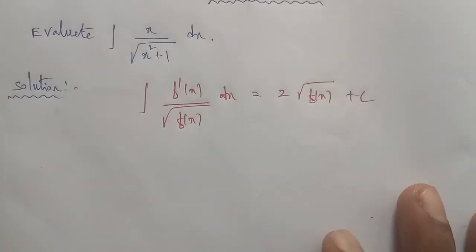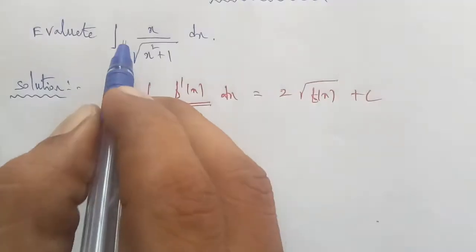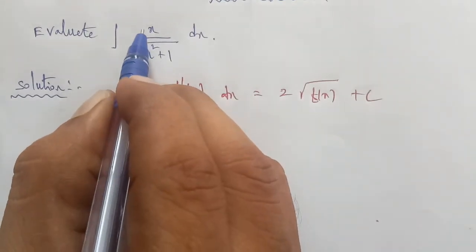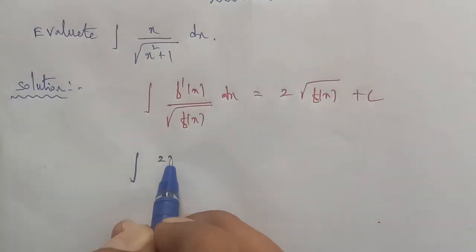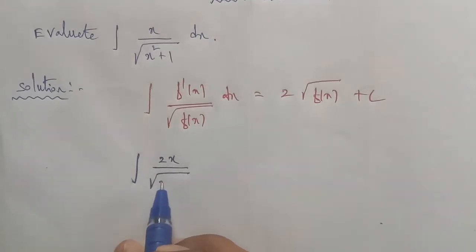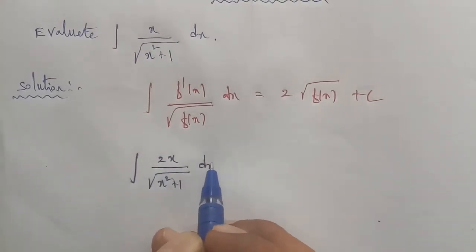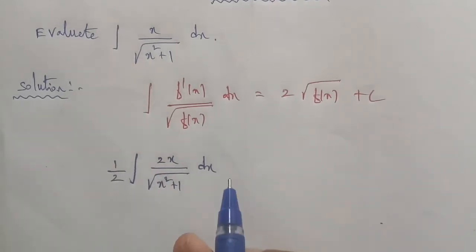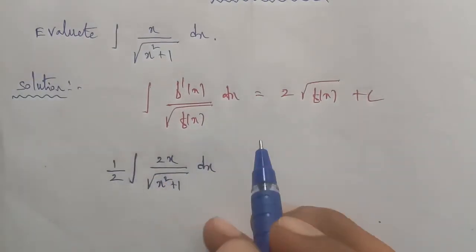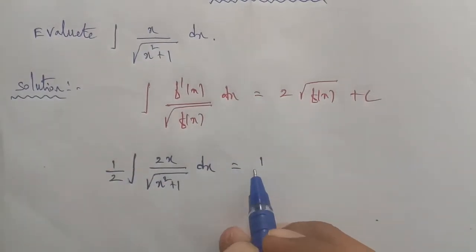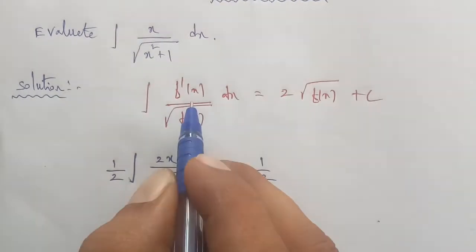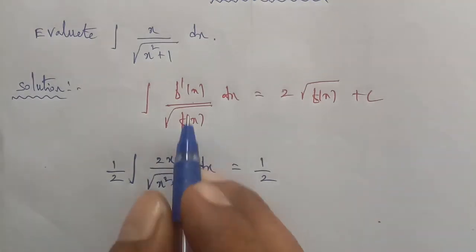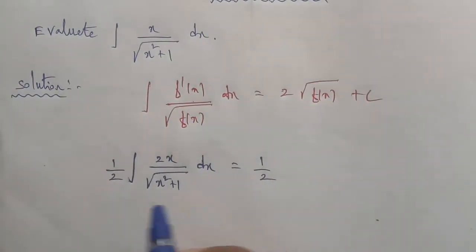To match the formula, we multiply and divide by 2 — writing the integral as one-half times the integral of 2x divided by square root of x squared plus 1 dx. Now the numerator 2x matches the derivative of f(x) = x squared plus 1, since the differential of x squared is 2x and the differential of 1 is 0. So the formula is now applicable with the factor one-half outside.